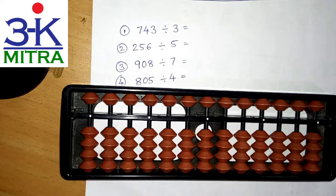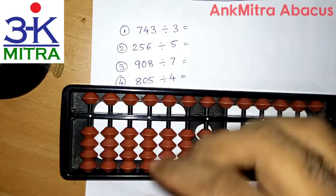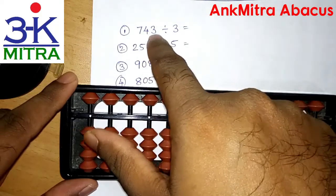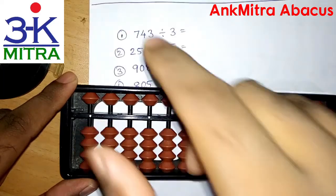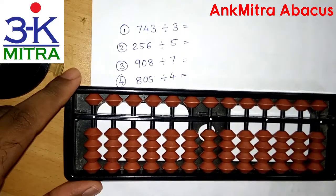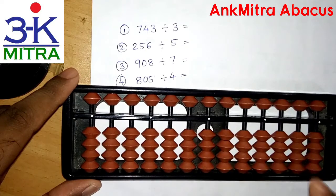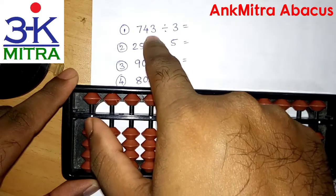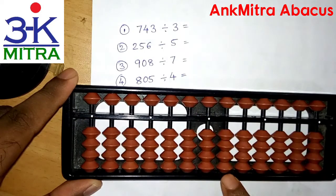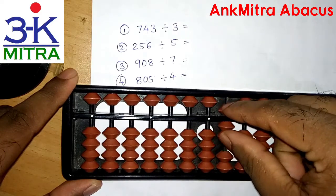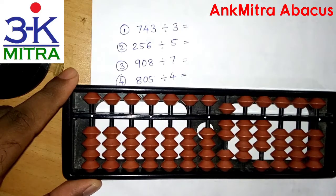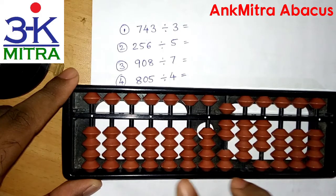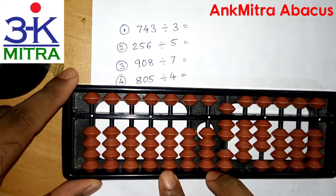Let's look at the first example. The number is 743 divided by 3. We need to take this number as a question set on a separate set of rods on the Abacus. I will consider this as the units place of our question set. This being a three digit number, I will start with the hundreds place. The number 743 is taken on the Abacus, and the answer will be seen on the answer set.